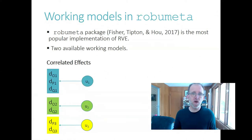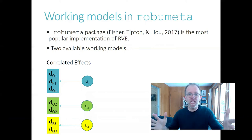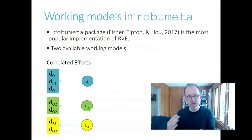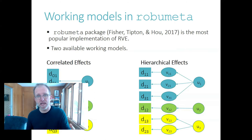The default working model is called the correlated effects model. It allows for there to be correlation between the effect size estimates drawn from the same study, but it only includes a single random effect per study. So that amounts to assuming that all of the heterogeneity in the effect sizes exists between studies — there's no within-study heterogeneity except for what's due to sampling. The other available working model is called the hierarchical effects model. It does allow for within-study heterogeneity, but it doesn't allow for there to be correlation between the effect size estimates.